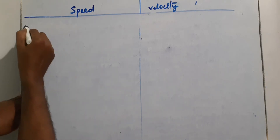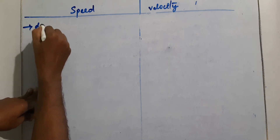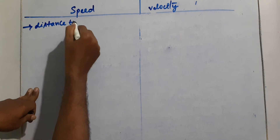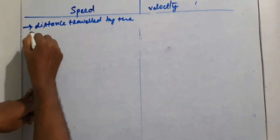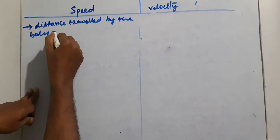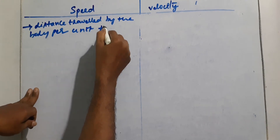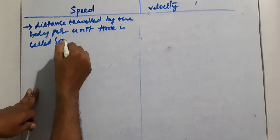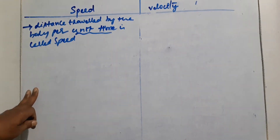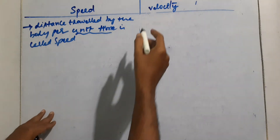So what about speed and velocity? Speed is nothing but distance traveled by the body. Distance traveled by the body per unit time is called speed. The unit time may be taken as one second, one minute, or one hour.